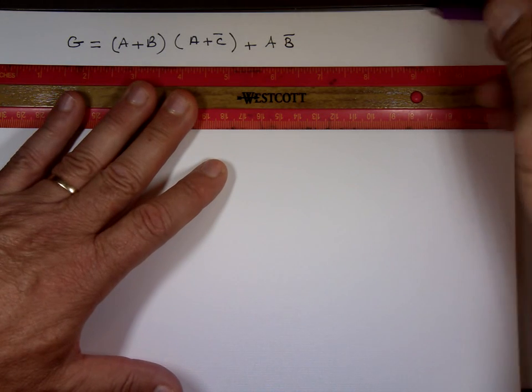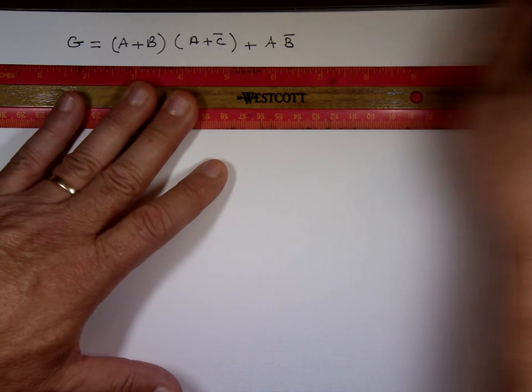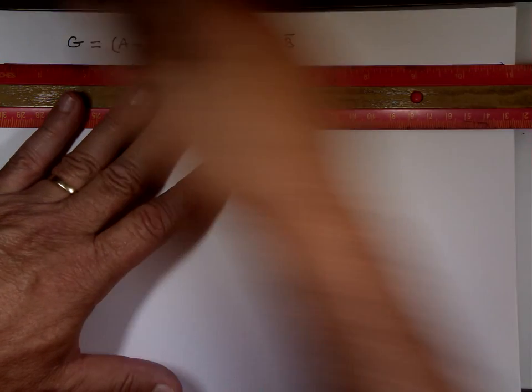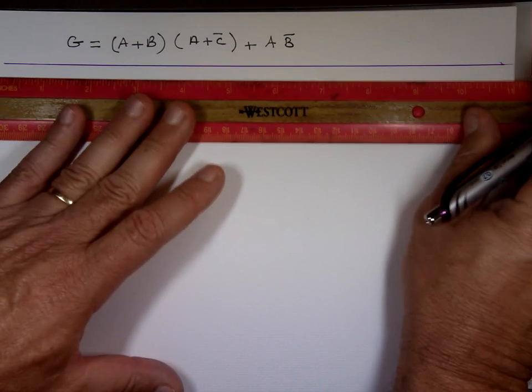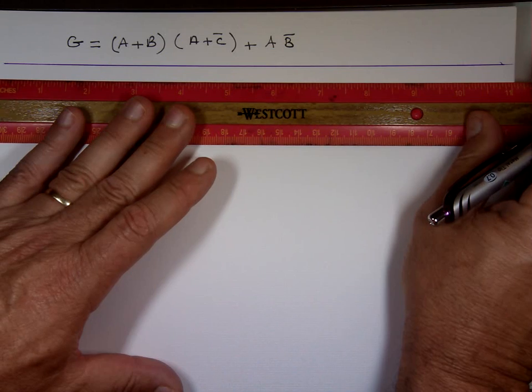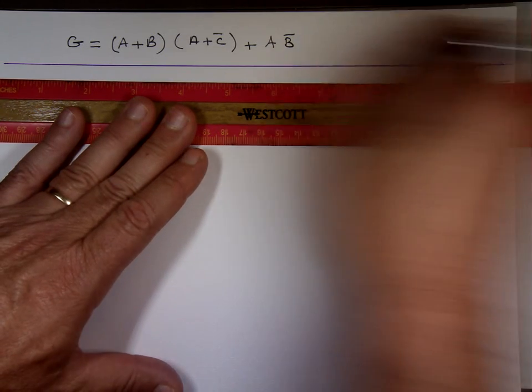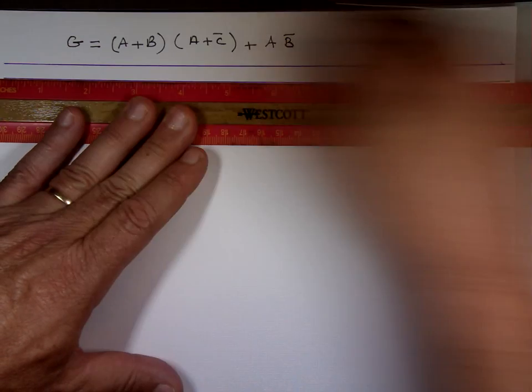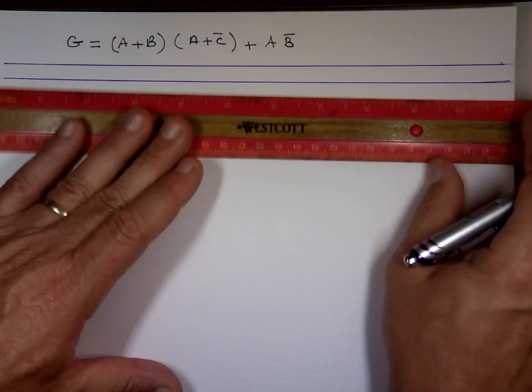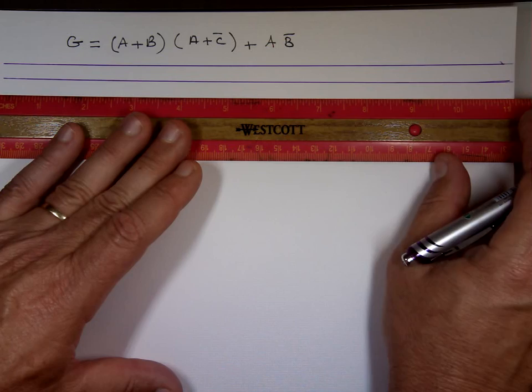Let's do A, B, and C — let's find the truth table for this. Since I have three inputs, this is going to be the label.